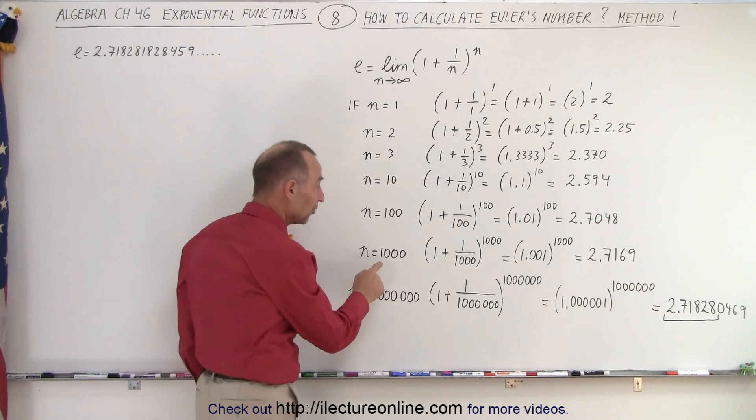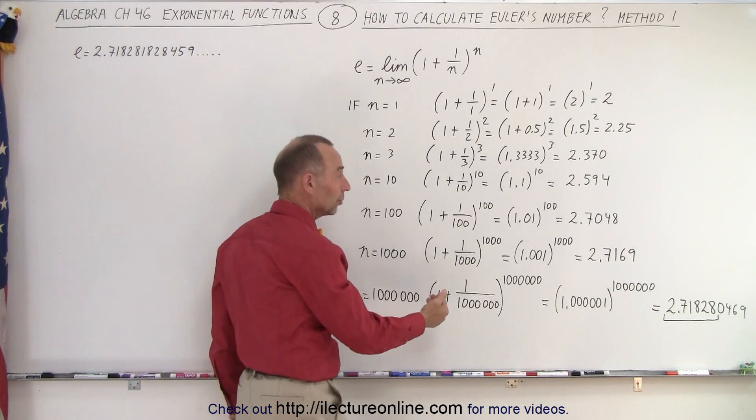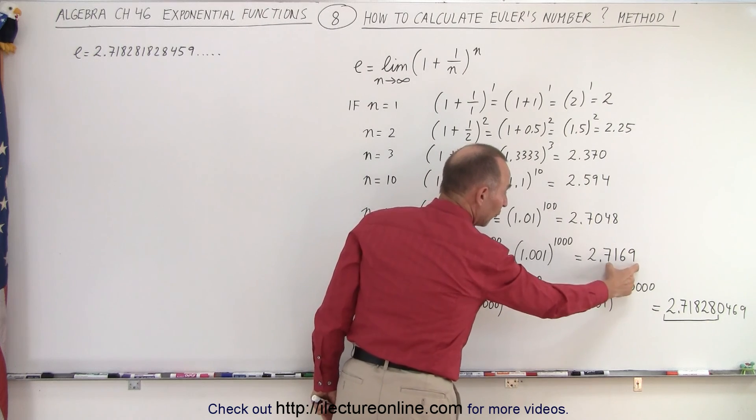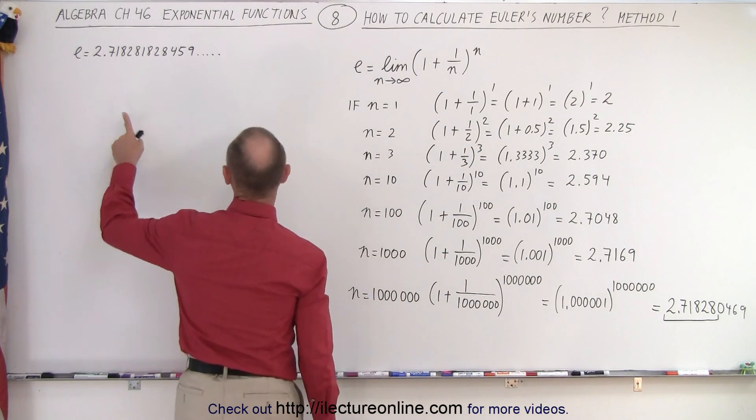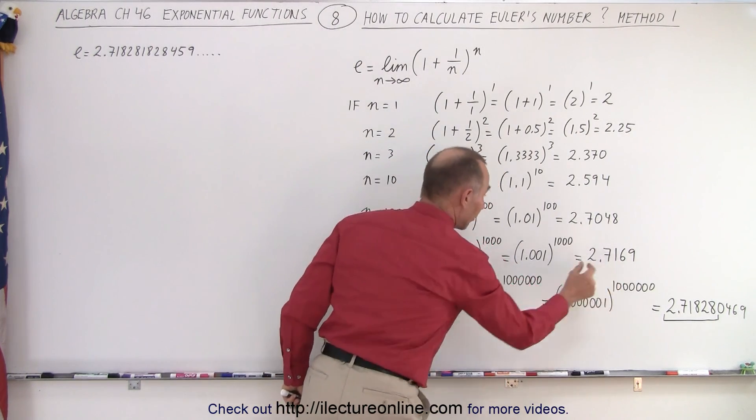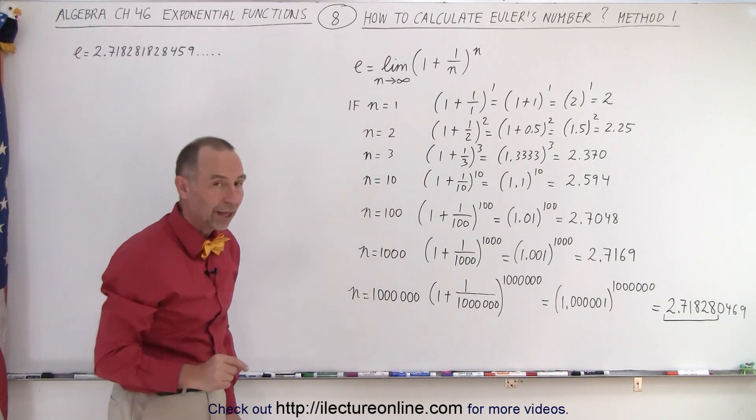When n becomes 1,000, now we're getting really close. Now we get 2.7169 to four decimal places. So now you can see that the first two decimal places are correct if we use n equals 1,000.